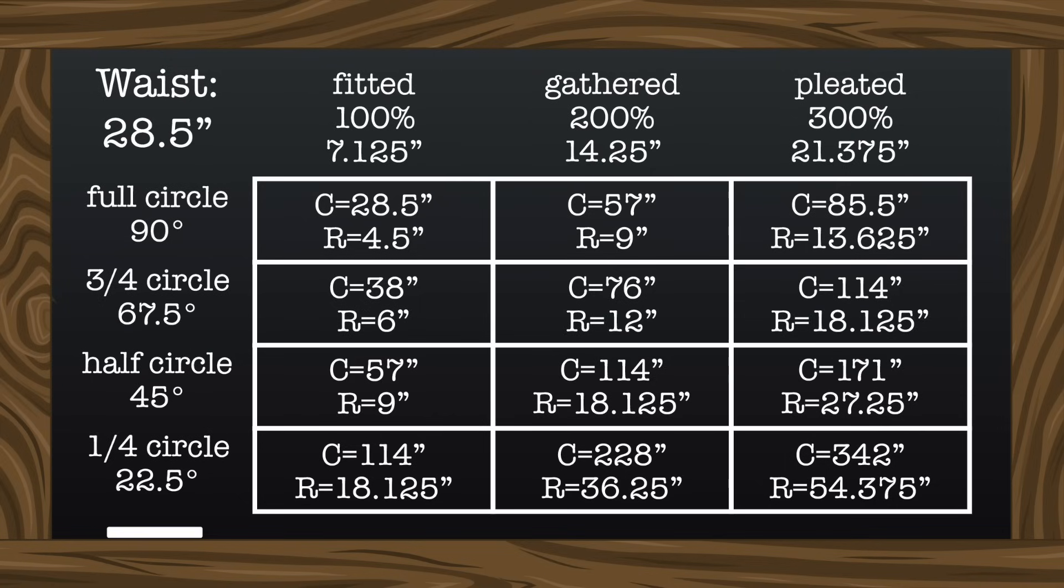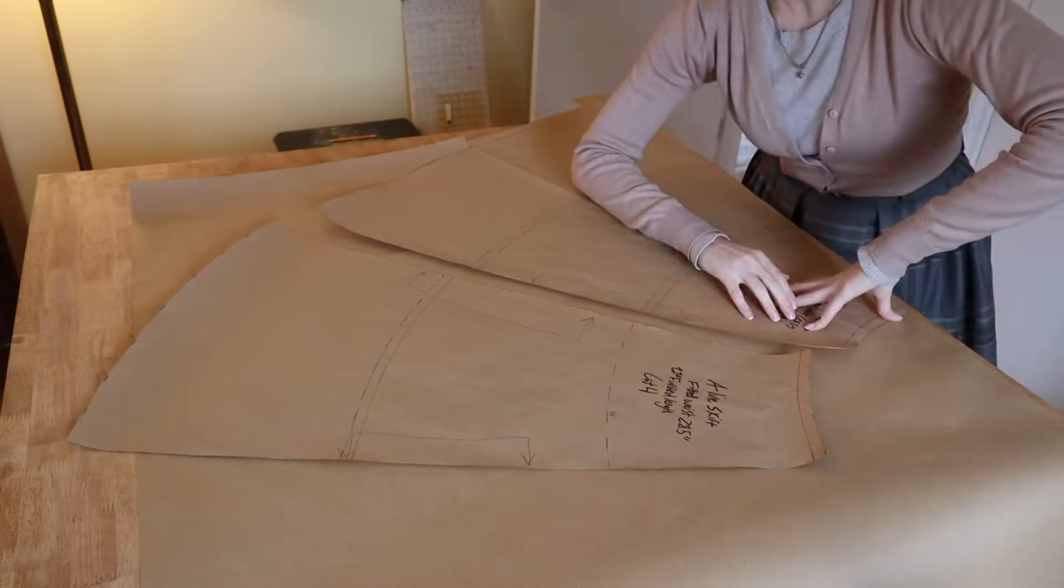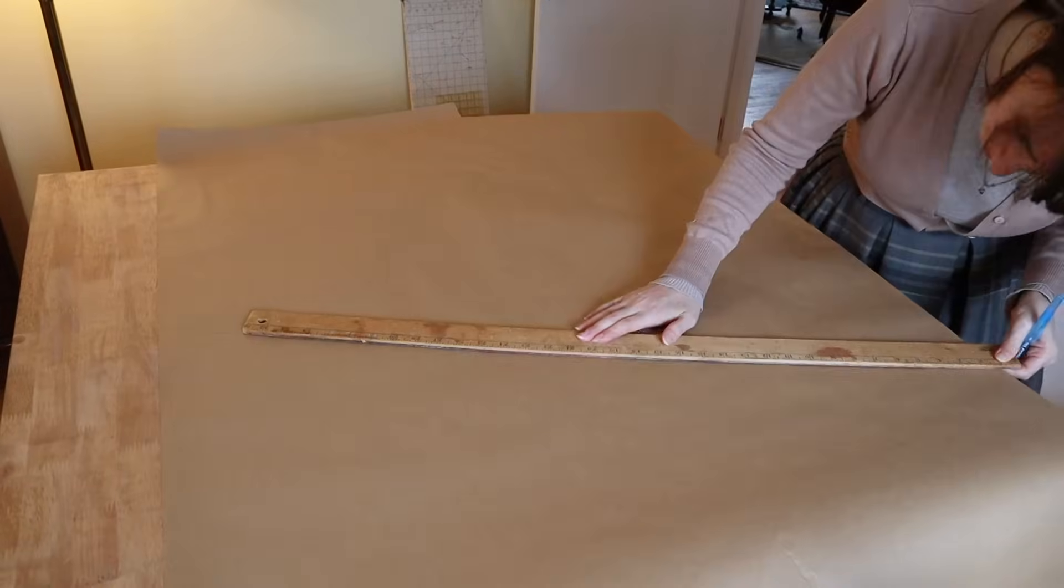To pattern the skirts, we need an angle of 67.5 degrees. I'm actually just going to take my quarter circle and my half circle and add them together. And the rest of the patterning is the same from here.